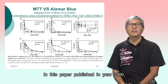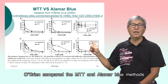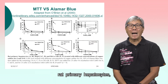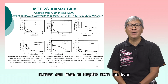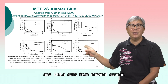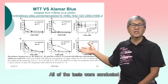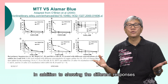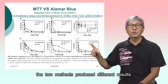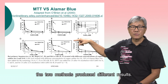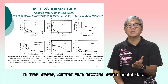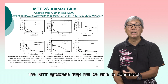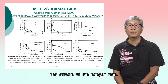In a paper published in the year 2000, O'Brien compared the MTT and AlamarBlue methods using three cell types: rat primary hepatocytes, the human liver cell line HepG2, and HeLa cells from cervical cancer. All tests were conducted using copper sulfate at 6-hour and 24-hour time points. In addition to showing different responses across the three cell types, the two methods produced different results. In most cases, AlamarBlue provided more useful data, because copper sulfate has strong reductive power and the MTT approach may not be able to counteract the effects of the copper ions.